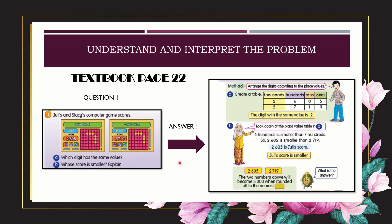We are going to look at the answer — what are the methods used and the order to solve the problems. Number one, we are going to arrange the digits according to the place values. We are going to draw a table with thousands, hundreds, tens, and ones. Then we write down the numbers: 2,605 and 2,790.